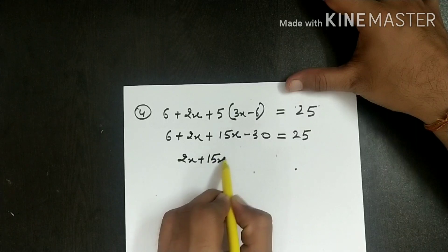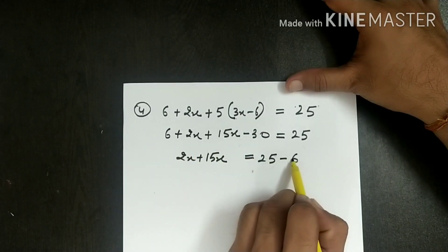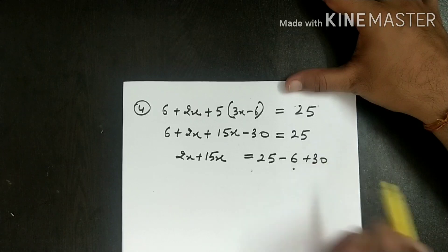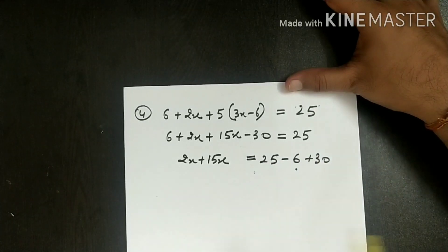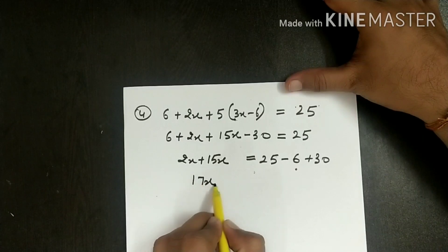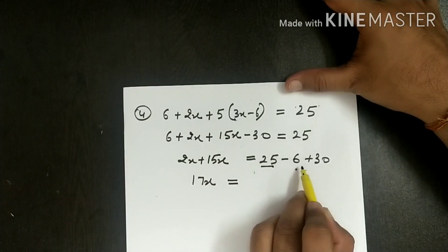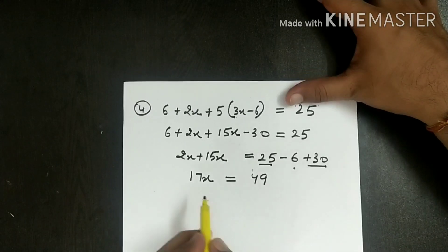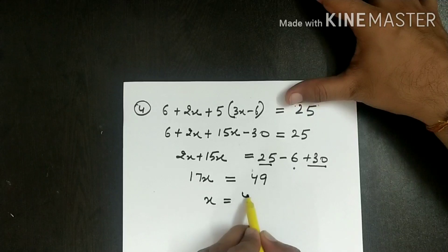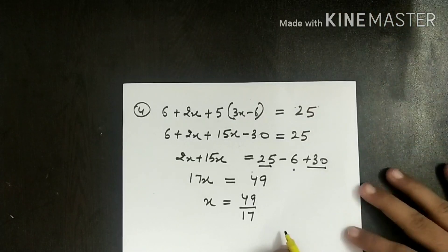Arranging: 2x + 15x on the left = 17x. Moving 6 to the right gives -6, and 30 becomes +30. So 17x = 25 + 30 - 6 = 49. The answer is x = 49/17.